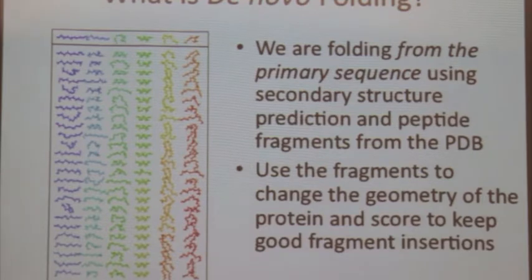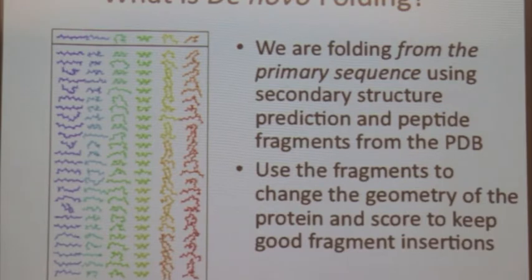200 fragments for each sequence window. But when you're folding, you only use 25 to 50 of those. Because those are the only ones that really meet all the criteria that you put in, such as secondary structure prediction, restraints, for example, chemical shifts, and things like this.